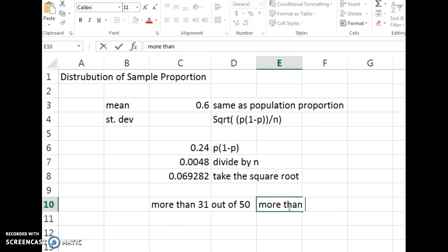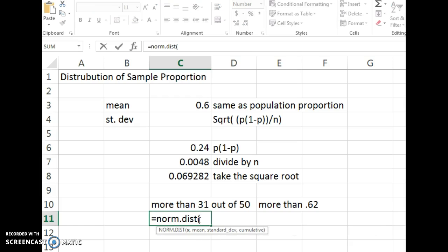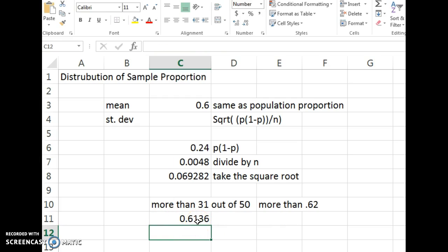So more than 31 out of 50. Another way to write that is more than 62%. And we can use normal distribution norm.dist. So what's the chances of 62 or more if we're given that our mean is 60% and our standard deviation is .069282. And we always type in true. And so we get this result. Now remember, Excel's always giving you the chances of your value or less. The probability of having 31 or less is what this is. So if we ever want to do a more than, a greater than, we have to do 1 minus our answer. So 1 minus C11. And then you get the probability of having 31 or more people who would have the characteristic in your sample.